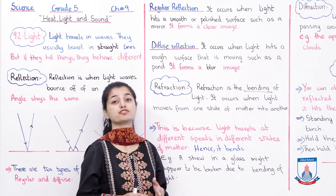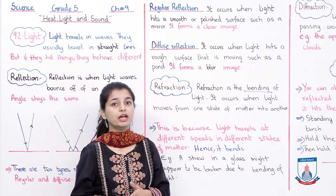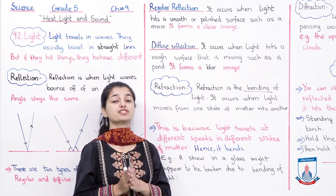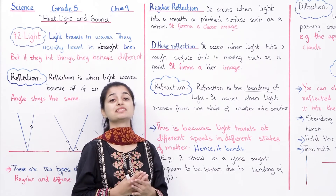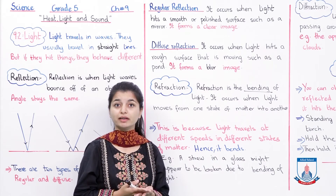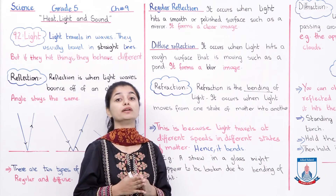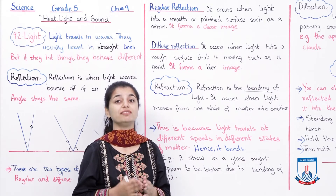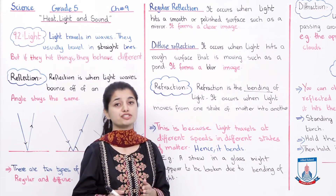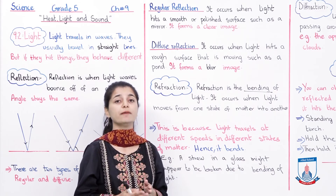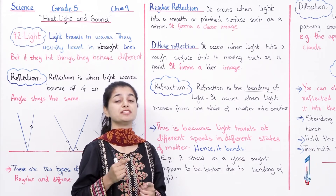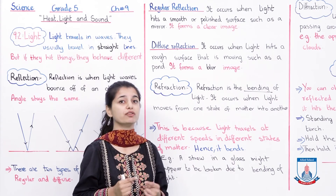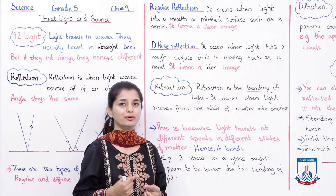A straw in a glass might appear to be broken due to the bending of light. If you look at the image, the straw looks broken — but that is not the case. It is only light refraction: as light moves to the other state of matter, it changes its speed and it bends.